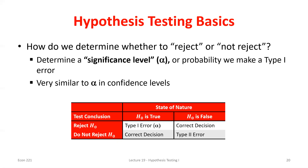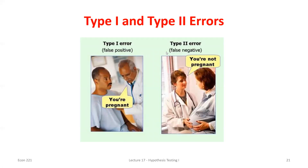Let's illustrate Type 1 and Type 2 errors with a pregnancy test example. The null hypothesis is that the person is not pregnant. A Type 1 error would be rejecting that null — telling them they are pregnant — when clearly they're not. That's rejecting when we shouldn't have. A Type 2 error is failing to reject the null — saying they're not pregnant — when clearly we should have been rejecting it.